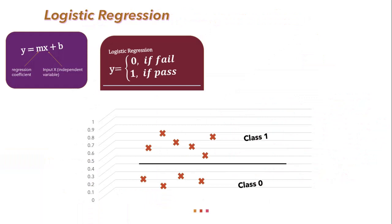Let's start understanding how logistic regression works. In linear regression we modeled the relationship between the dependent variable and independent variable with the linear equation y = mx + b. Here also we need to find the linearly separable straight line between two classes using regression coefficients m and b. But these coefficients differ in their interpretation from linear regression, since the outcome in logistic regression is a probability between 0 and 1.